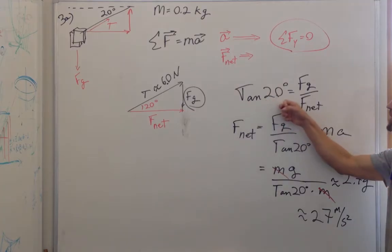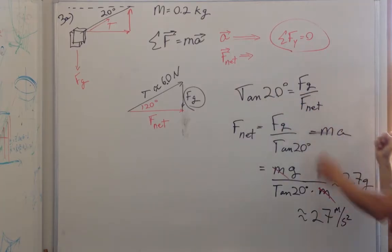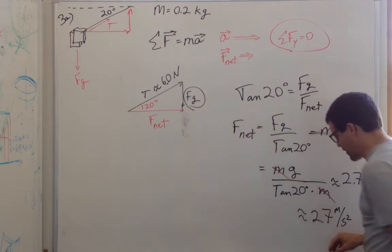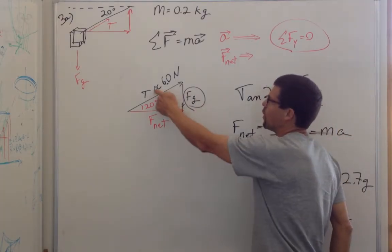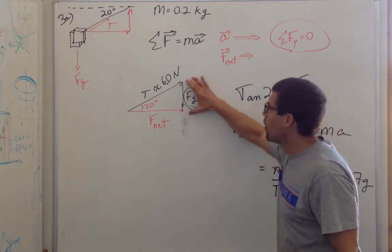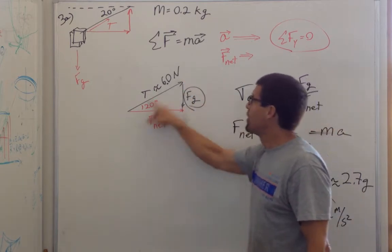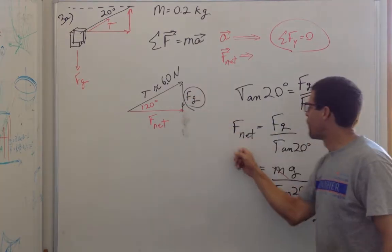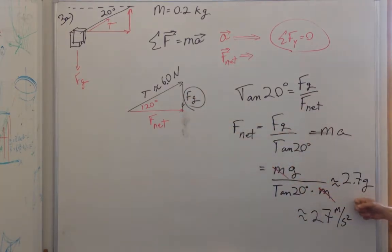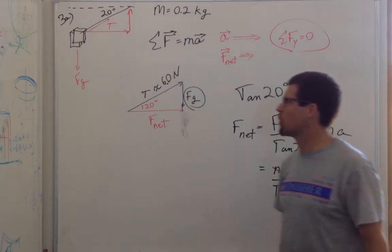Either way, you end up with tangent of 20 degrees is the force of gravity over the net force. And you'd also find that the sine of 20 is the force of gravity over the tension. So although you only know the force of gravity, by knowing these angles, you can find the tension, it's about 6 newtons, and the net force, which yields an acceleration of about 2.7 gravities, or 27 meters per second squared.